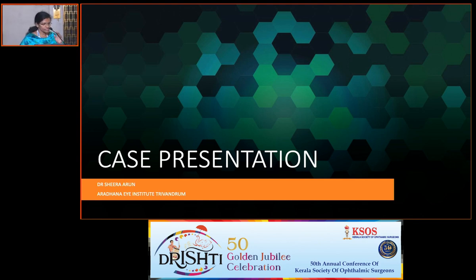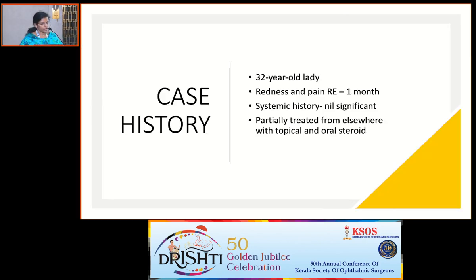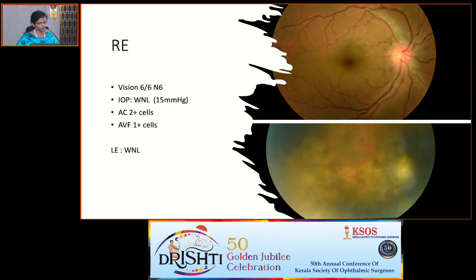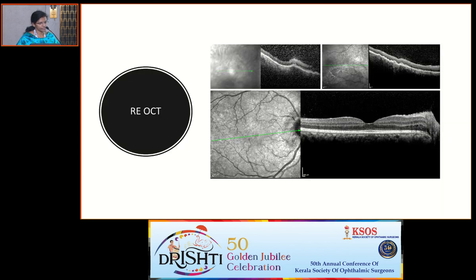The first case is a 32-year-old lady who presented with redness and pain in the right eye lasting around one month. Systemic history was not significant and she presented after partial treatment from elsewhere with topical and oral steroids. The left eye was normal. In the right eye, vision at presentation was 6/6 and intraocular pressures were normal. Anterior chamber showed 2+ cells and anterior vitreous phase showed 1+ cells.